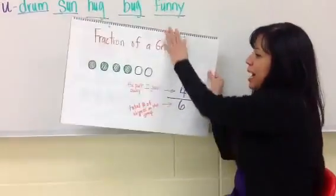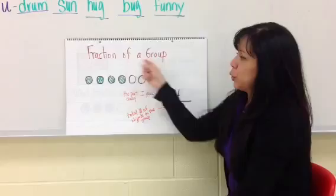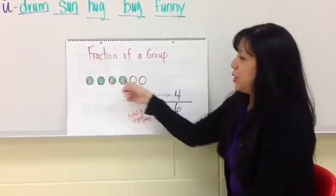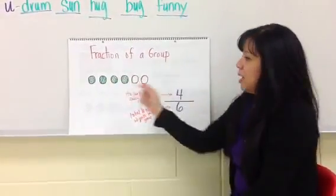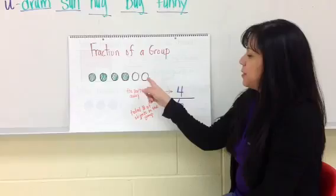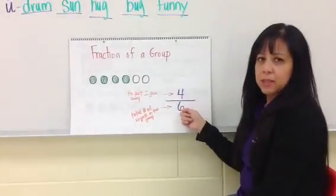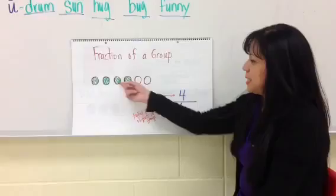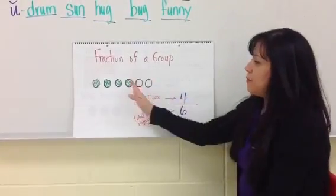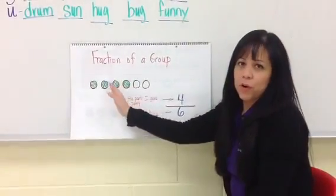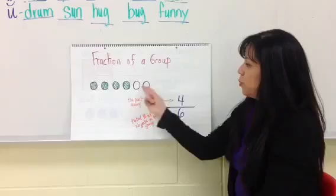Also, when you have groups, as we do here with our candy, I have one, two, three, four, five, six equal parts or objects. Out of those six, I gave you four or four are green. Two are left out.